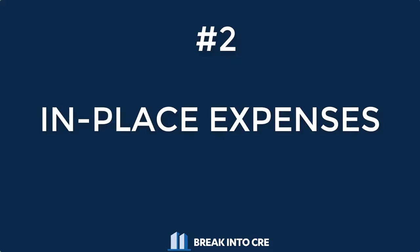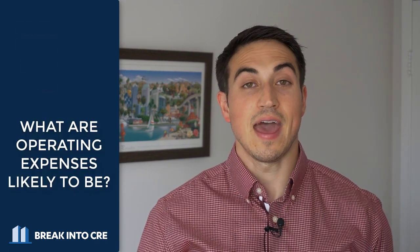Once you feel confident with your in-place base rent and other income, the next step is to figure out your in-place expenses. You're trying to make an assumption about what your operating expenses are going to be for the entire duration that you hold the property. A trailing 12-month operating statement is what you need to figure out what operating expenses have been and what they might be in the future. The biggest wildcard in your expenses is likely property taxes, because they're often reassessed upon sale — so account for that based on the city, county, state, and country you're in.